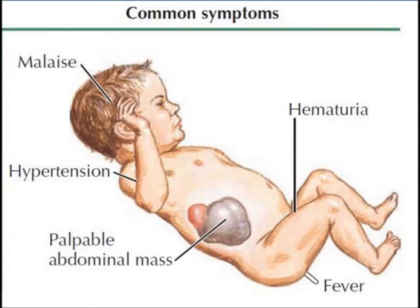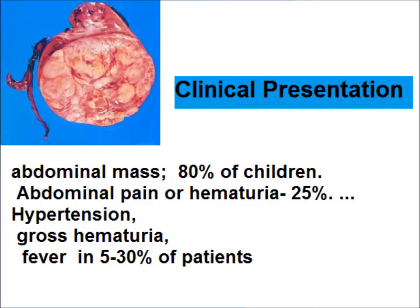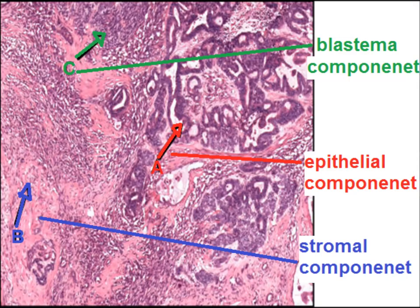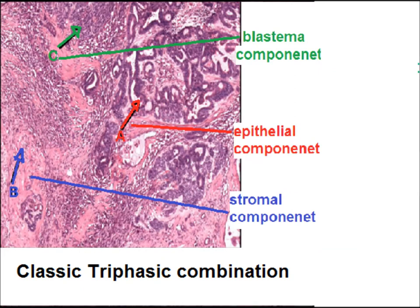The most common presenting complaint is a palpable abdominal mass in 80% of children. Abdominal pain or hematuria occurs in 25%, hypertension is present, and gross hematuria in less than 5%. Grossly, it is a large tumor almost replacing the kidney, well circumscribed with a variegated appearance. On histology, there are three components: blastema, epithelial, and stromal — the classic triphasic combination.